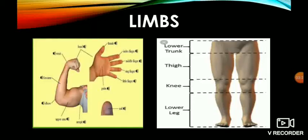Now we will study about limbs. As we can see, there is a picture of a hand and legs. The picture of the hand consists of hand, wrist, forearm, elbow, upper arm and armpit.